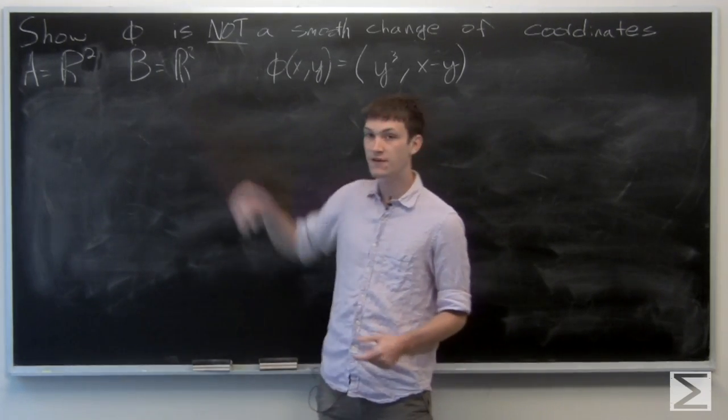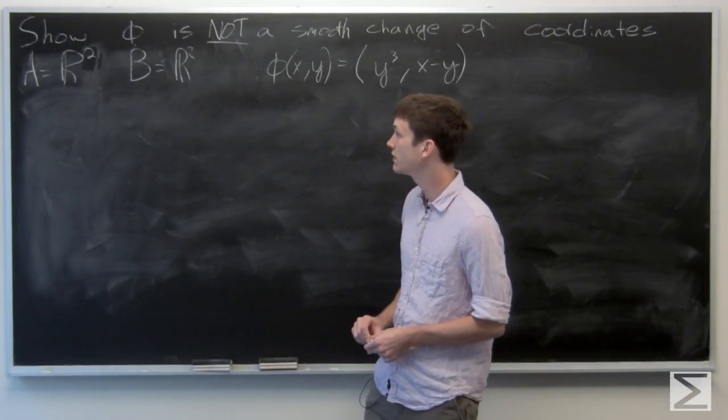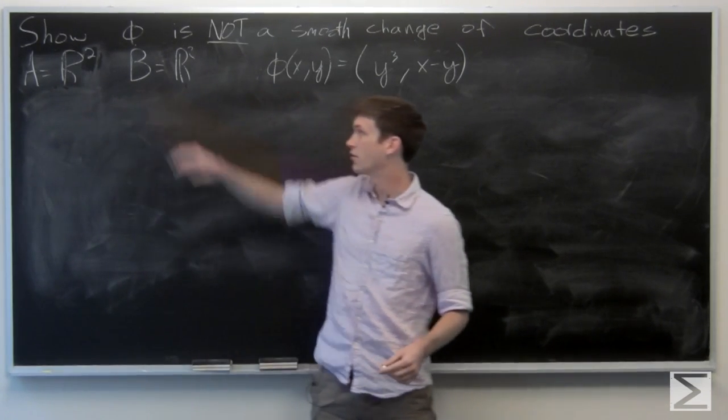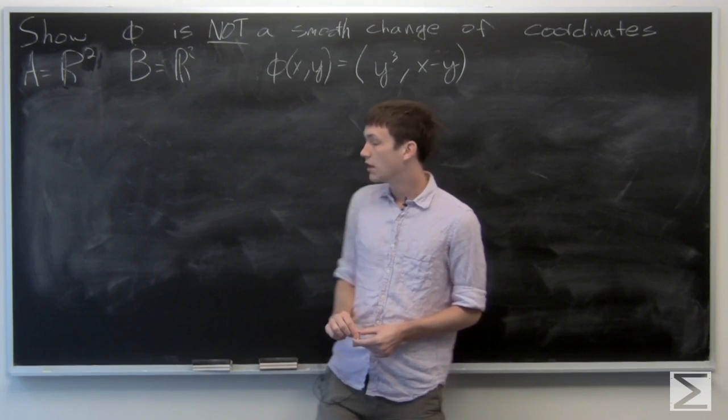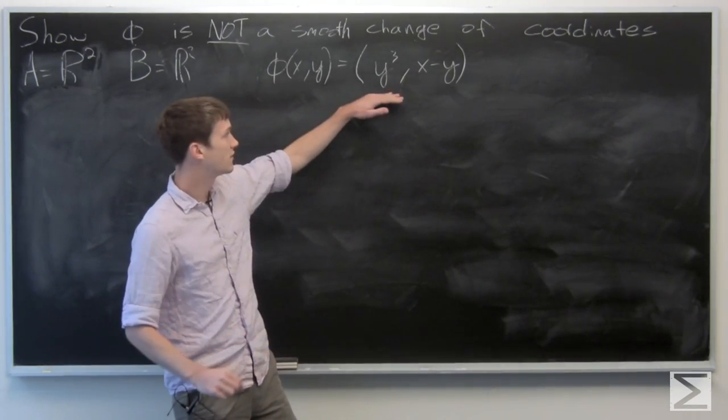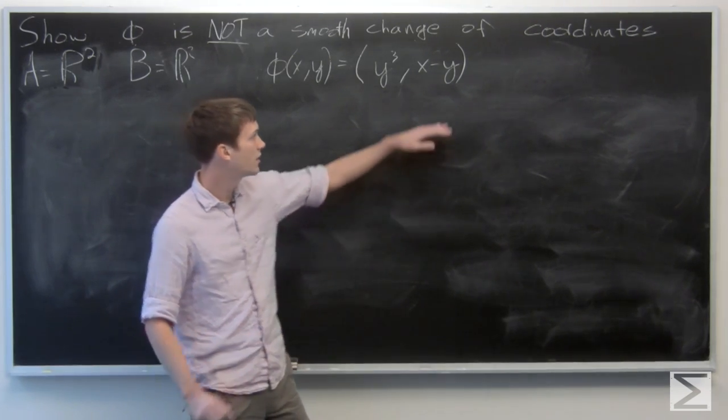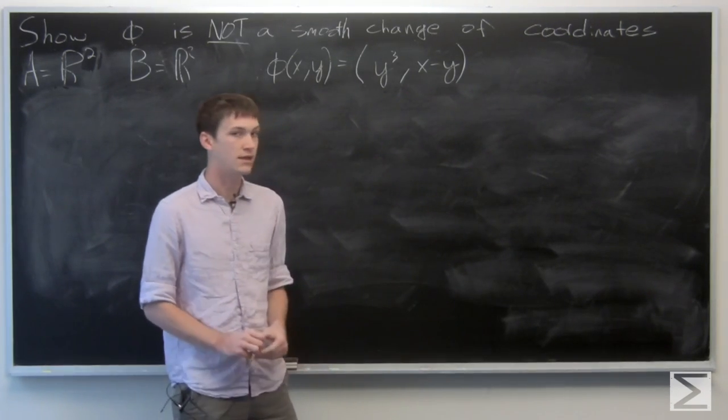In this problem, we're asked to show that phi is not a smooth change of coordinates, where our domain is R² and our codomain is also R². Phi of (x,y) is defined as (y³, x-y).